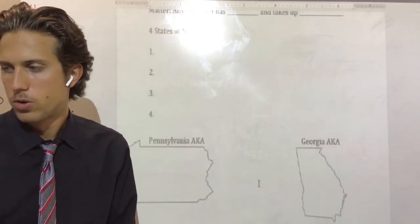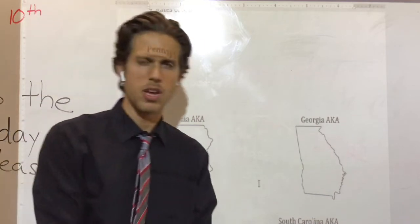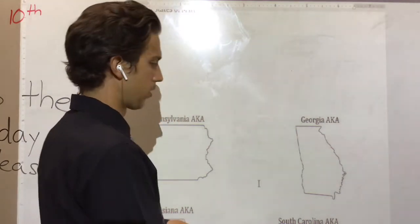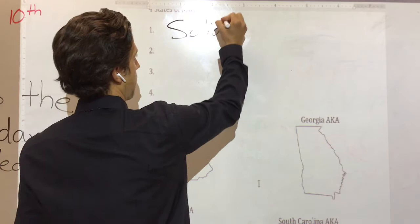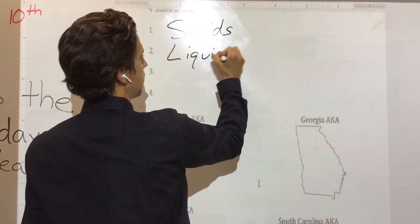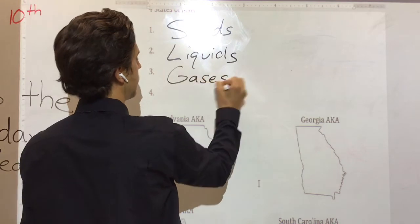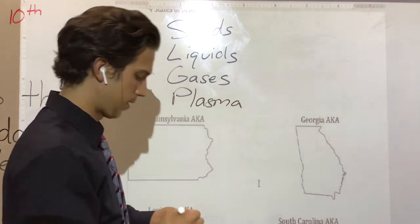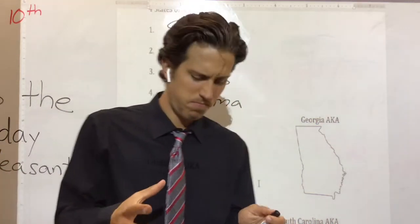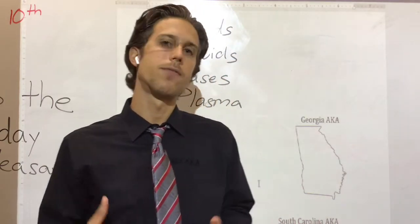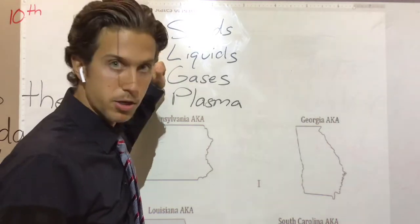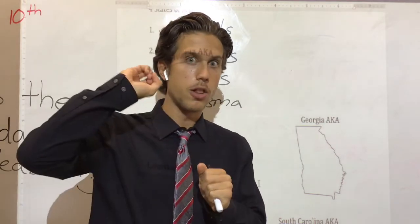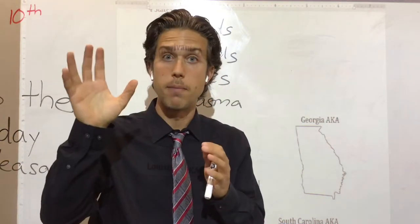So we have four states of matter. You might be familiar with them. We're going to jot them down: solids, liquids, gases, and plasma. These are just the ways that matter exists — it exists in these different forms. You're probably very familiar with solids, liquids, and gases. Plasma can be seen in neon signs, and also in celestial bodies like stars.